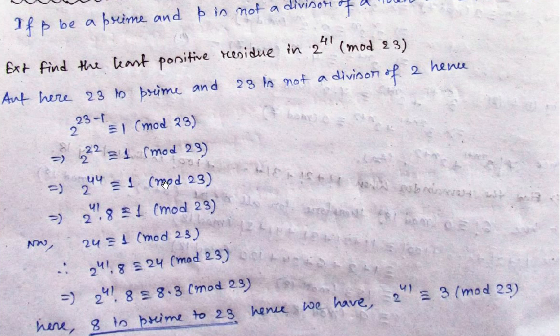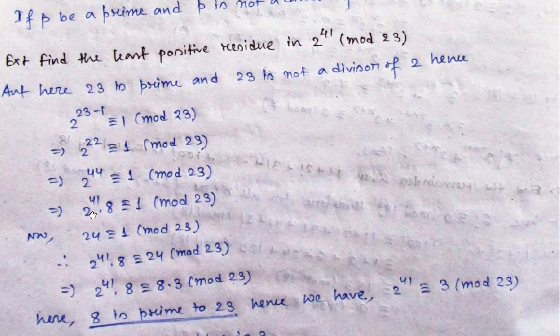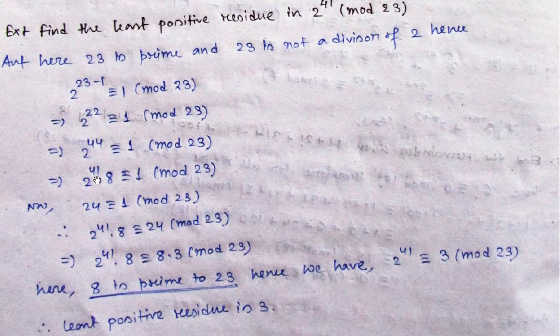So 2 to the power 44 can be written as 2 to the power 44 into 2 cube. 2 cube means 8. That is congruent to 1.